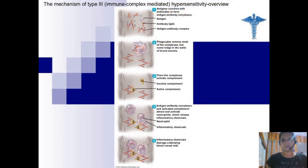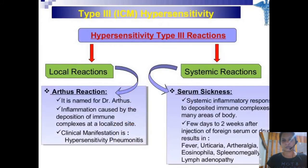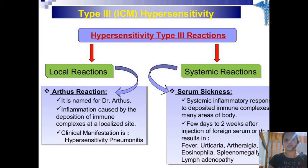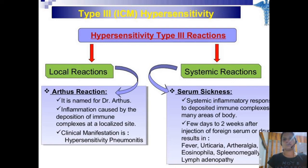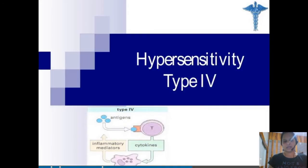These are the diagrammatic representations of the mechanism of type 3 hypersensitivity reaction. There are two types: local reaction and systemic reaction. The example of a local reaction is the Arthus reaction, named in honor of the scientist Dr. Arthus, whereas serum sickness is the example of a systemic type 3 hypersensitivity reaction.